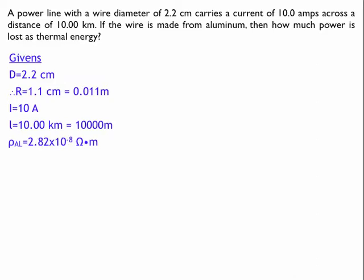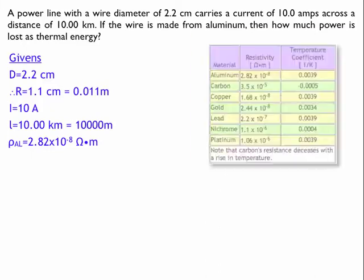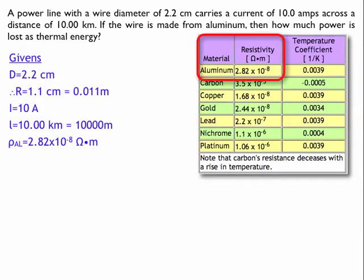The resistivity of the wire is 2.82 times 10 to the negative 8 ohm meters. And I know the resistivity because it tells me it's an aluminum wire, so I can look elsewhere and find a table that lists the resistivity of aluminum as 2.82 times 10 to the negative 8 ohm meters.